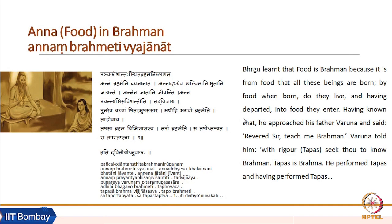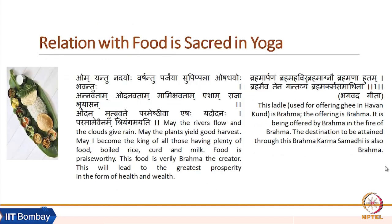This is also the sutra where the notion of pancha kosha is established. The human self is nothing but the encased aspect of Brahman — encased in anna, in manas, in vijnana, in prana. Anna is identified as the first layer of self. The physical body, as we all know, is made up of anna, and so it is naturally accepted as the first layer of self. Bhragu continued doing tapas and kept arriving at newer insights, and that is how the other layers of self are identified in this Upanishad.